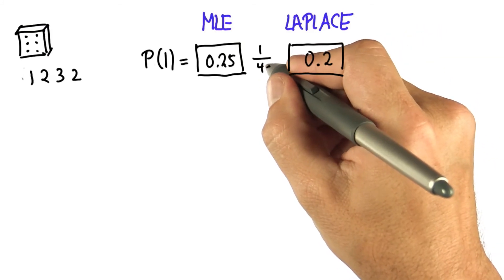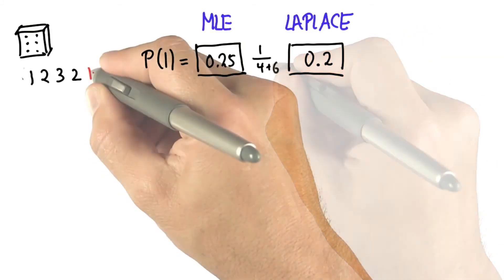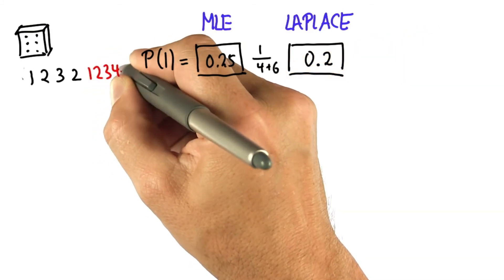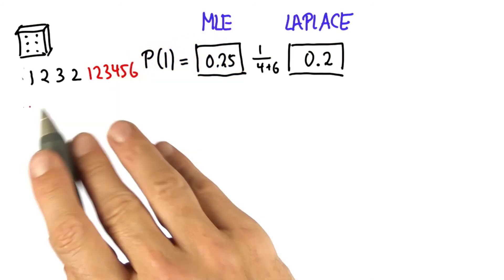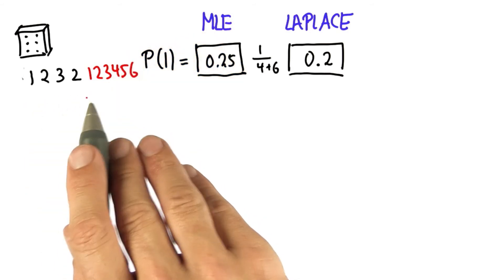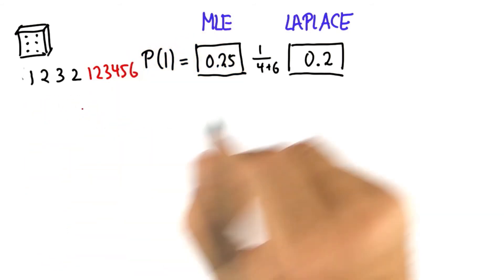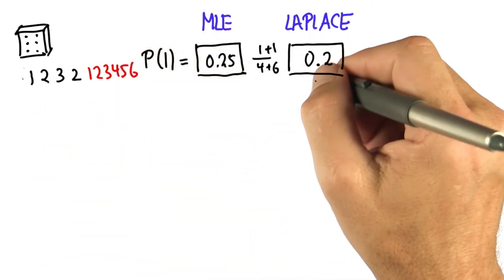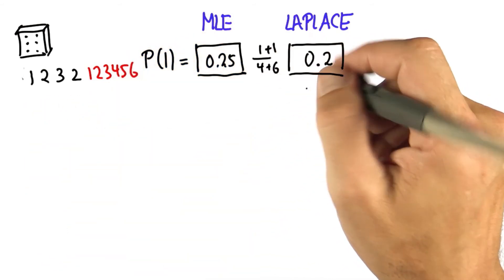With six fake data points — 1, 2, 3, 4, 5, 6 — we get to observe the outcome 1 twice. And that gives us 2 over 10, or 0.2.